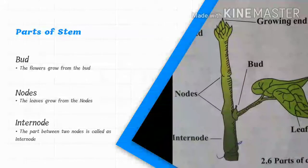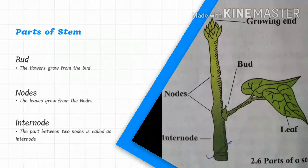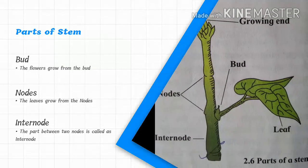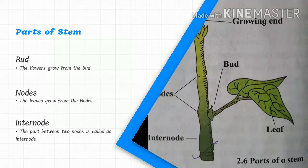Parts of stem: Bud - the flower grows from the bud. Nodes - the leaf grows from the nodes. Internodes - the part between two nodes is called internodes.